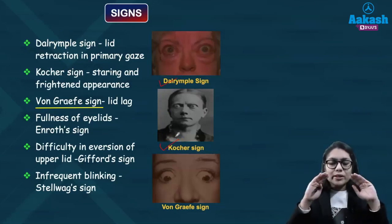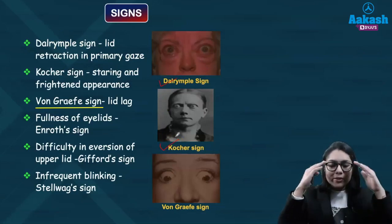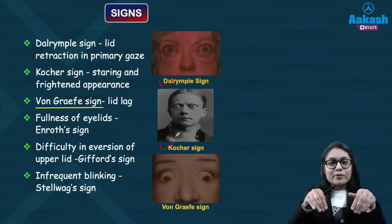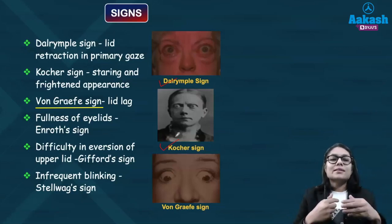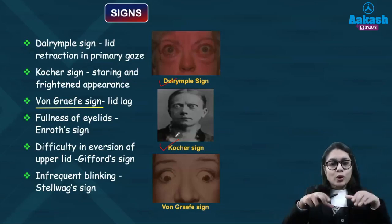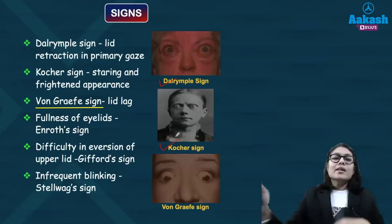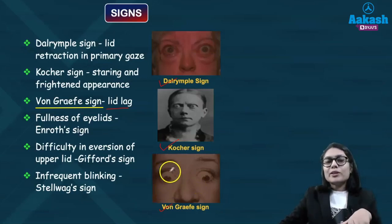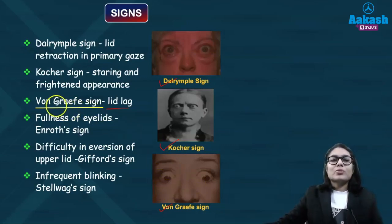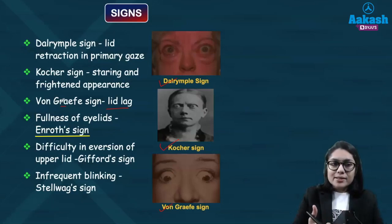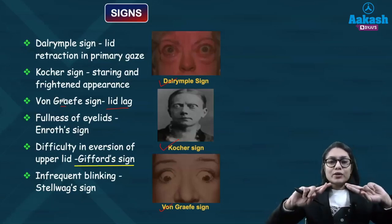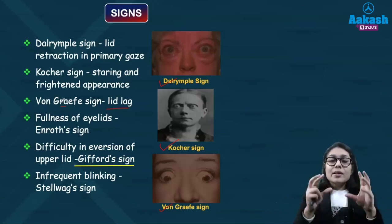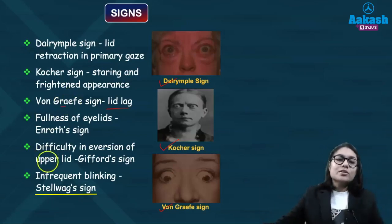There can also be lid lag — normally when looking down, the lid follows the eyeball downward; however in thyroid eye disease the lid fails to follow the eyeball and lags behind. This lid lag is termed the von Graefe's sign. Additionally, there is fullness of the eyelids known as Enroth's sign, difficulty in eversion of the eyelid known as Gifford's sign, and infrequent blinking known as Stellwag's sign.